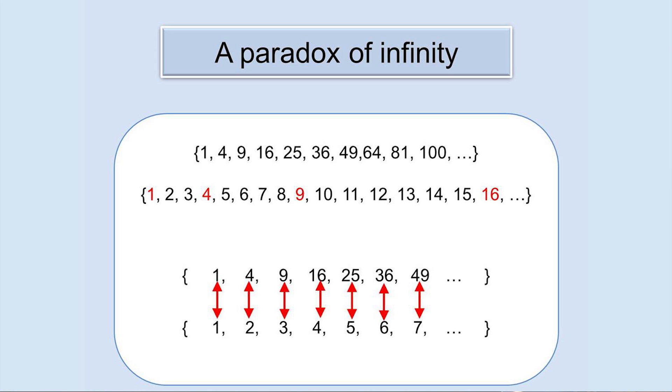So they have the same number of elements. This puzzled mathematicians from Galileo's time until Cantor resolved the paradox with his theory of infinite sets. But it was at the beginning of the 20th century that a plethora of paradoxes emerged, which led to rather sensational developments in the logic underlying pure mathematics.